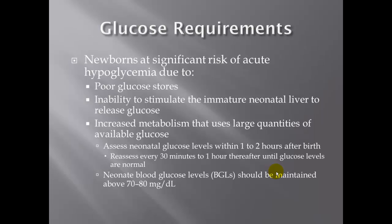Newborns are at significant risk of acute hypoglycemia due to poor glucose stores and the inability to stimulate the immature neonatal liver to release glucose. Glucose is stored in the form of glycogen, which are polysaccharide chains, and increased metabolism uses large quantities of available glucose. Assess neonate glucose level within one to two hours after birth and reassess every 30 minutes to an hour until normal. Neonatal blood glucose levels should be maintained at about 70 to 80 milligrams per deciliter. Heel sticks will do just fine.